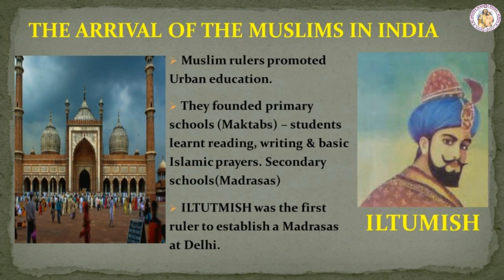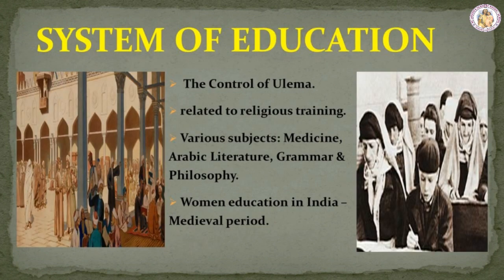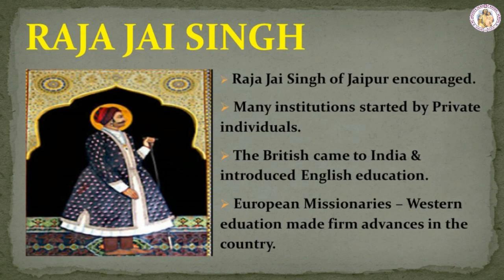System of Education. The system of education in medieval India was under the control of Ulima, meaning Islamic law. During those days, education was related to religious training. However, various subjects such as medicine, Arabic literature, grammar and philosophy were also taught. Women's education in India was prevalent during the medieval period. Raja Jai Singh of Jaipur encouraged learning of scientific subjects. Many institutions were also started by private individuals.